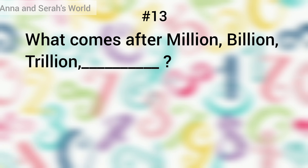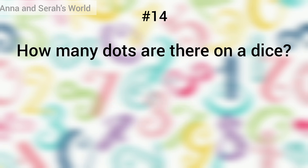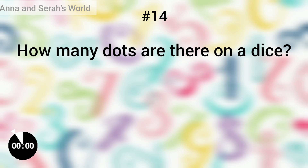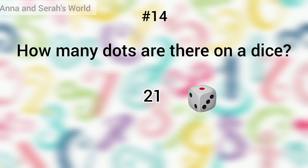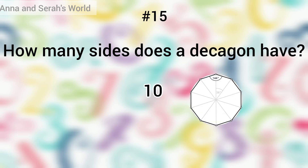The answer is quadrillion — it has 15 zeros. How many dots are there on a dice? The answer is 21. How many sides does a decagon have? The answer is 10.